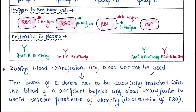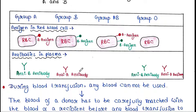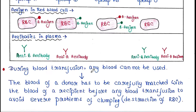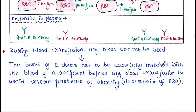During blood transfusion, any blood cannot just be used. Anti-A antibody binds to antigen A and destroys the antigen A containing RBC. Similarly, anti-B antibody binds to antigen B and destroys the antigen B containing RBC. The blood of a donor has to be carefully matched with the blood of a recipient before any blood transfusion to avoid severe problems of clumping or destruction of RBC.